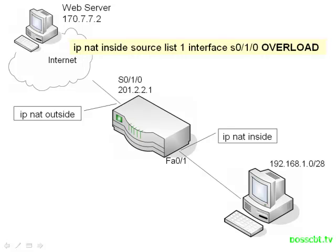For both PAT and dynamic NAT translation, we need to make sure that our access list actually identifies all of our inside local IPs. On our network here we have a slash 28. The biggest problem that occurs most often is the wildcard mask in your access list — is it properly configured to identify the slash 28? If not, some of these IPs might not be identified as candidates for NAT.